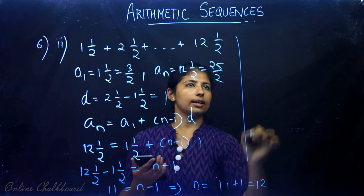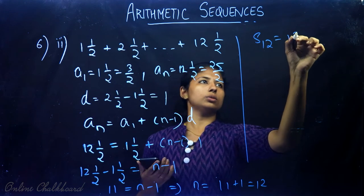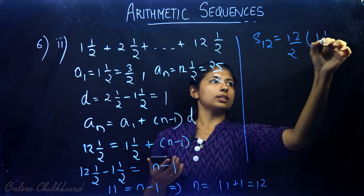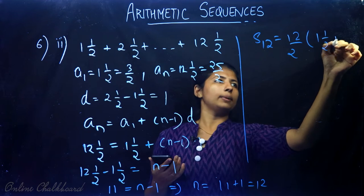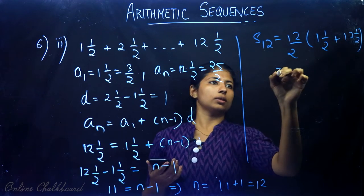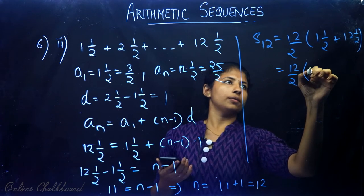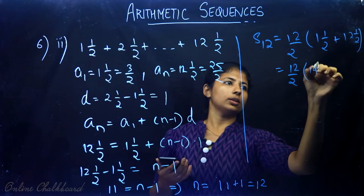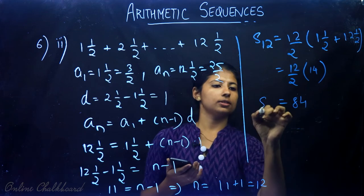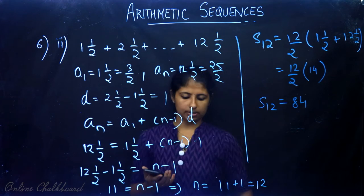So S12 equals 12 divided by 2 times (first term plus last term) equals 6 times 14, which gives 84. The sum of the first 12 numbers is 84.